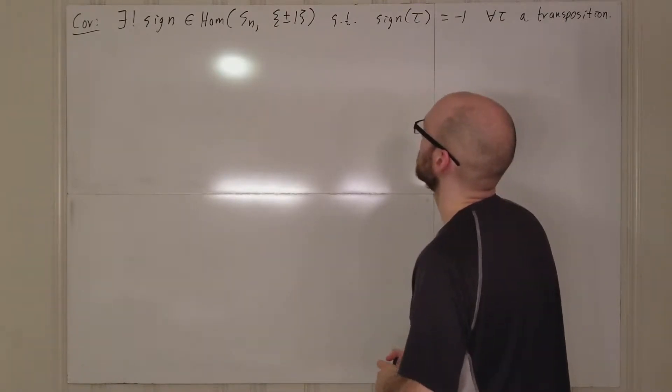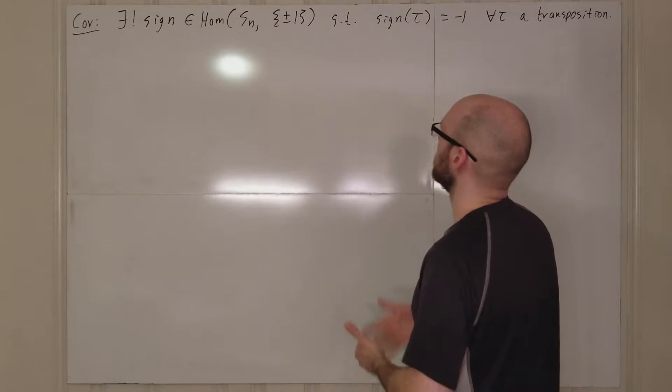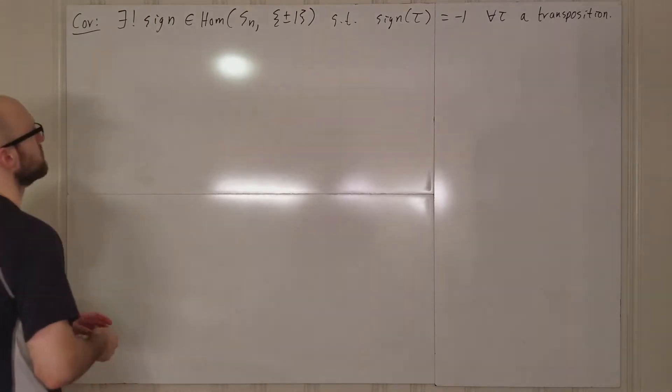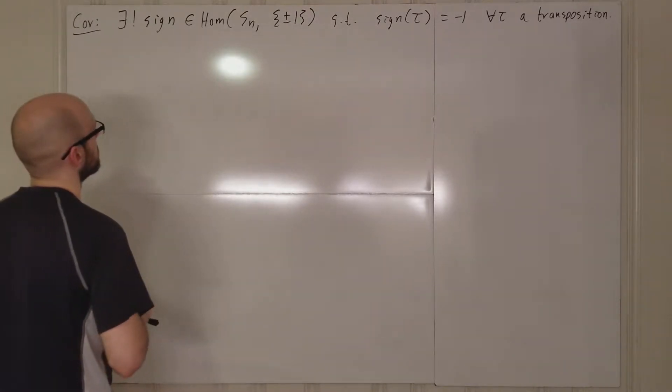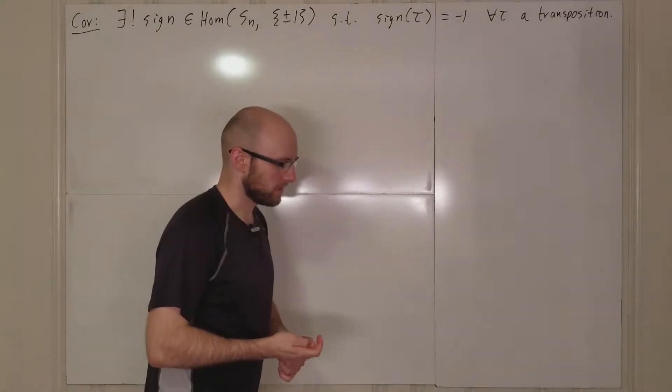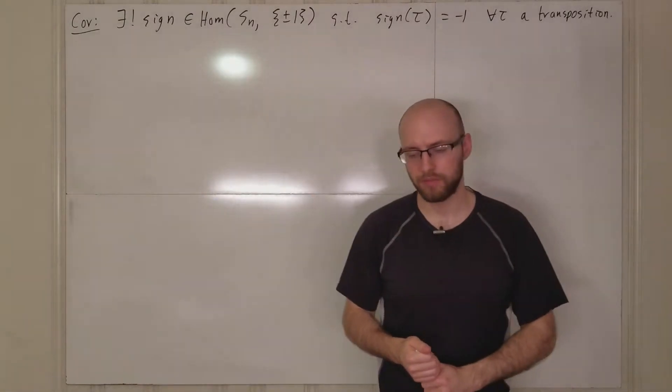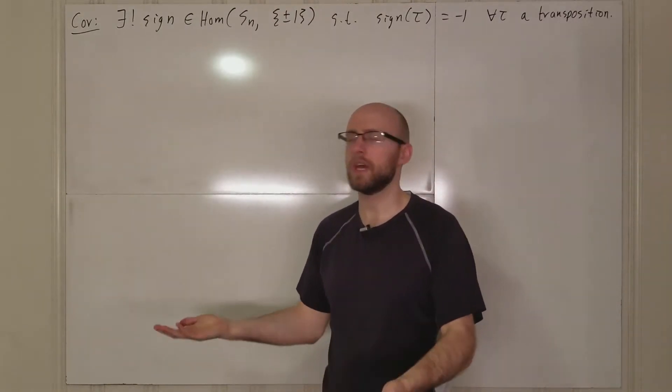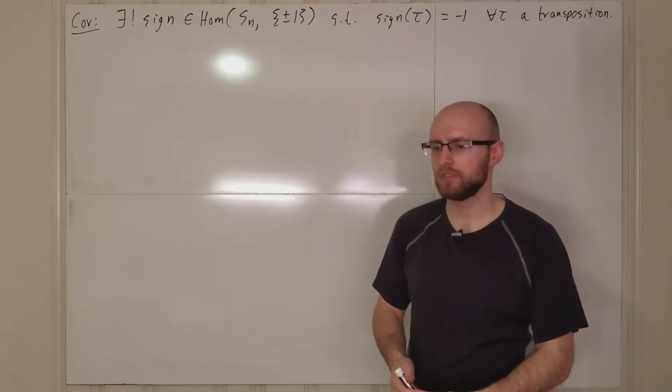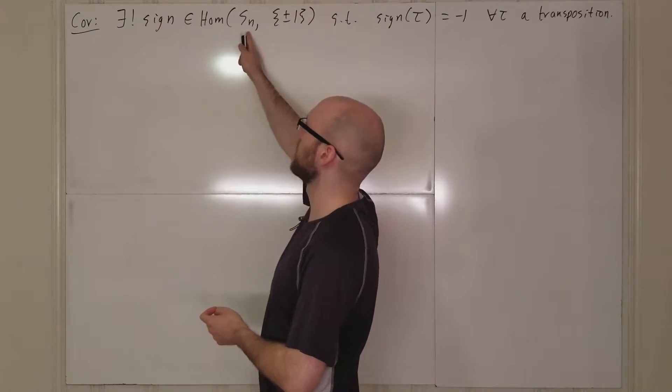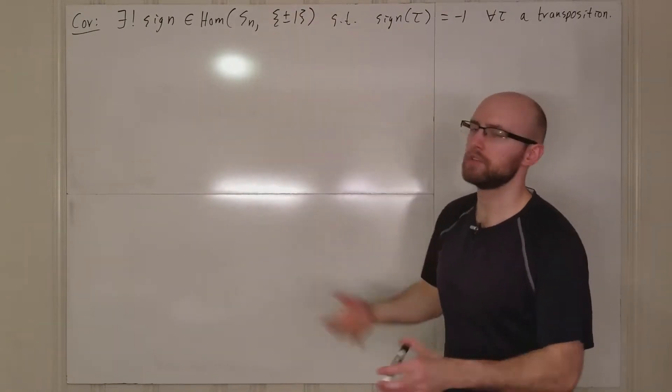And certainly this exists because it satisfies, it is a group homomorphism, and the reason it's unique is because, Sn is generated by transpositions. We proved that, because any permutation can be written using transpositions, and so the fact that we've determined this homomorphism on a generating set for Sn means that we've determined it everywhere.